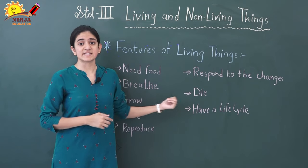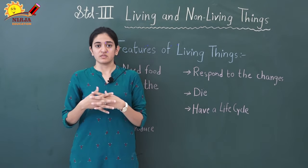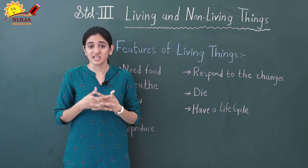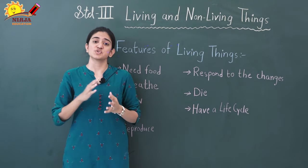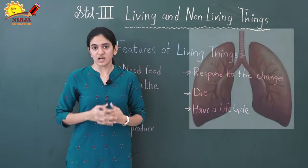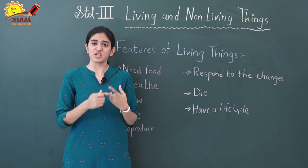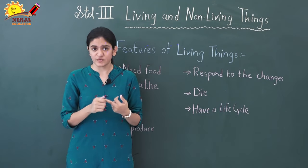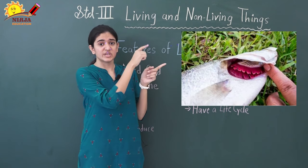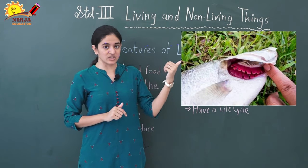Second, living things can breathe. We all require air — each and every living organism requires air. Different animals have different organs to breathe. Humans have lungs through which they breathe. Fish breathe through their gills — you can see in this image the inner part of the fish; these are the gills through which the fish breathes.